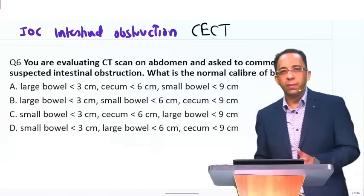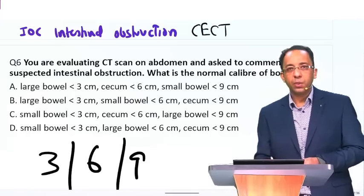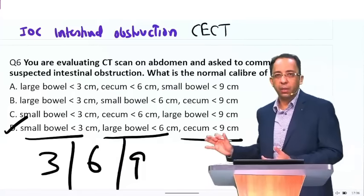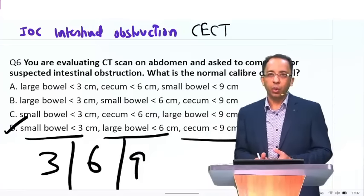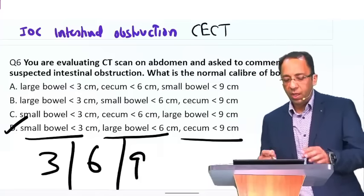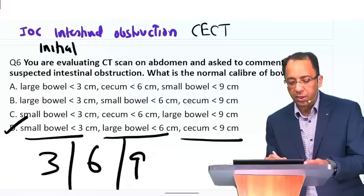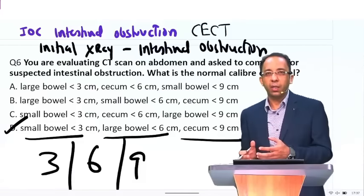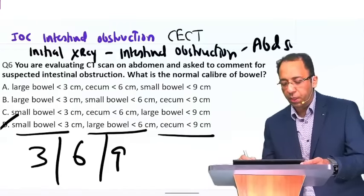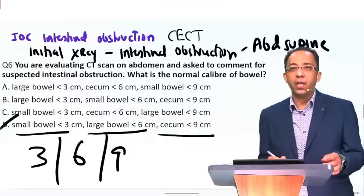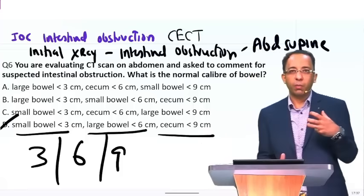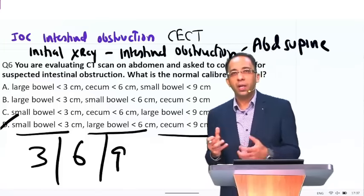How will you diagnose obstruction on CT? The rule is 3-6-9: small bowel more than 3 cm, large bowel more than 6 cm, cecum more than 9 cm. Cecum is more distensible, so the cutoff is higher for cecum compared to the rest of the large bowel. What is the initial best X-ray to be done for intestinal obstruction? The preferred initial X-ray is X-ray abdomen supine. In the supine plate, you can see the distribution of bowel loops, which helps you find where the obstruction is — centrally placed loops suggest small bowel obstruction; peripheral loops suggest large bowel obstruction.